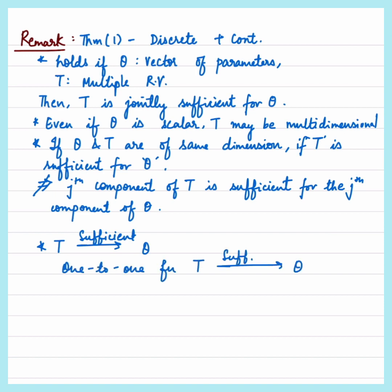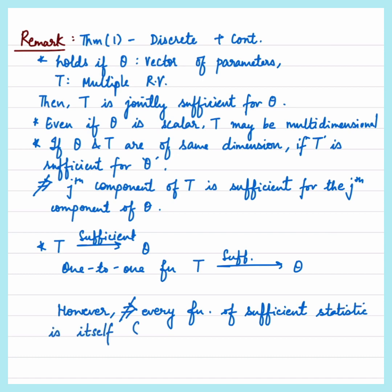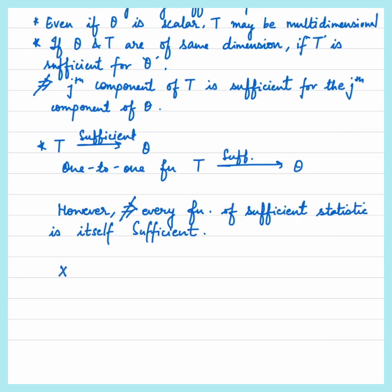If T is a sufficient statistic for theta, any one-to-one function of T is also sufficient. However, it does not follow that every function of a sufficient statistic is itself sufficient. For example, in sampling from a normal population, x-bar is sufficient for the mean mu, but x-bar squared is not — as a reminder, x-bar is sufficient for mu, not mu squared.